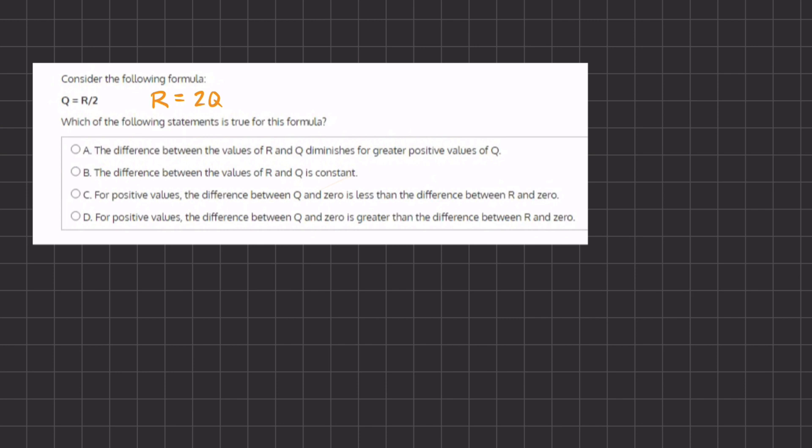Let's read option A. The difference between the values of R and Q diminishes for greater positive values of Q. So the difference between the values R and Q, if we plug in 2Q instead of R,